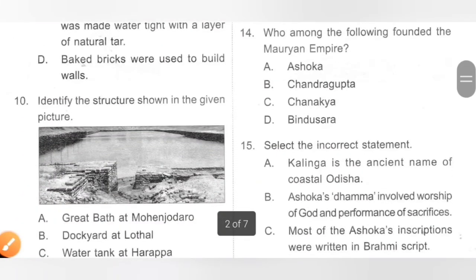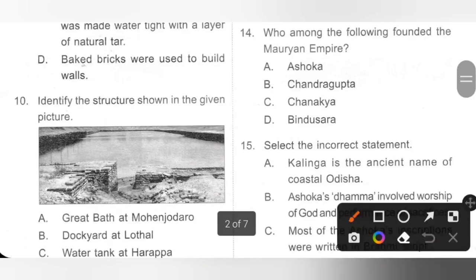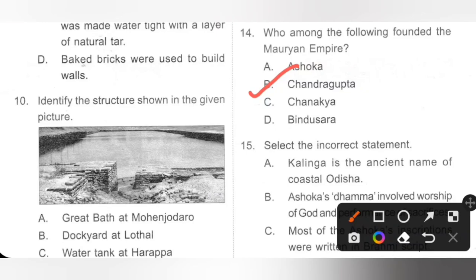Question 14: Who among the following founded the Mauryan Empire? A. Ashoka, B. Chandragupta, C. Chanakya, D. Bindusara. The Mauryan Empire was founded by Chandragupta. Bindusara was his son and Ashoka was his grandson. Option B is the correct answer.